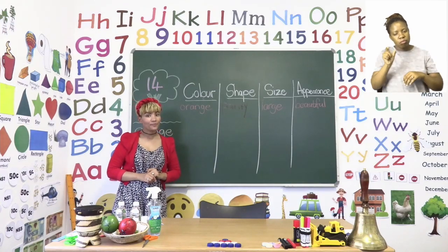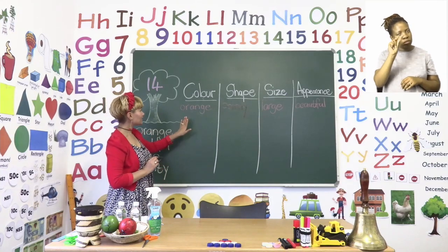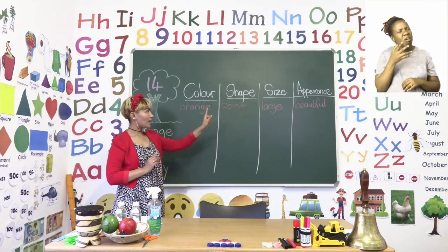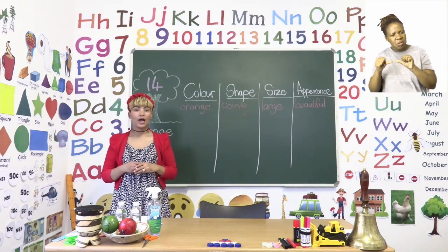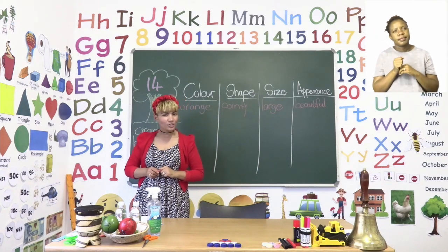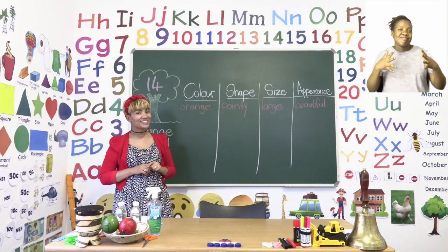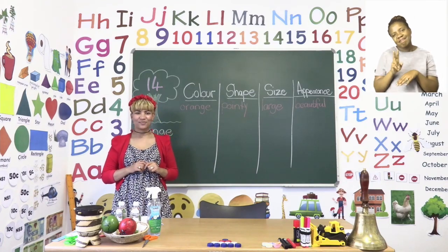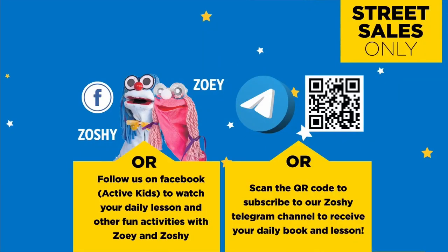Now you can go ahead and read through all the other words and decide: is it a color, a shape, a size, or does it describe appearance? I know you will have lots of fun, so I'm going to leave you to finish this activity. We will see you shortly after the break. Follow us on MyZone Facebook Active Kids to watch your daily lesson and other fun activities with Zoe and Zoshi.